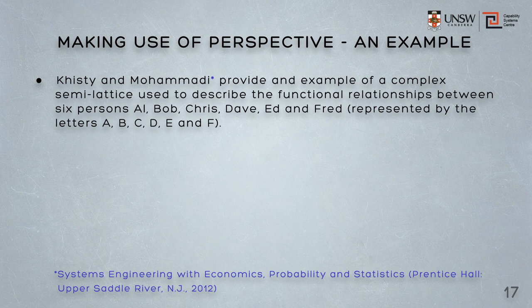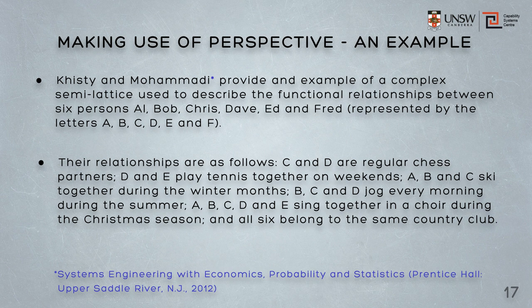In the literature, we can find a number of examples, and I've just chosen one here, of a complex semi-lattice which is used to describe the functional relationships between six people: Al, Bob, Chris, Dave, Ed and Fred. Their relationships are as follows: Chris and Dave play chess. Dave and Ed play tennis on the weekends. Al, Bob and Chris ski together during winter. Bob, Chris and Dave jog every morning during summer. Al, Bob, Chris, Dave and Ed sing in a choir during the Christmas season. And all six belong to the same country club.